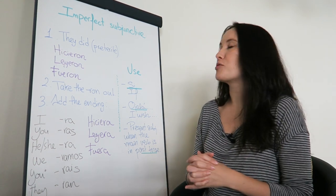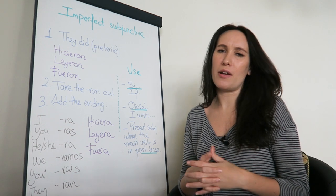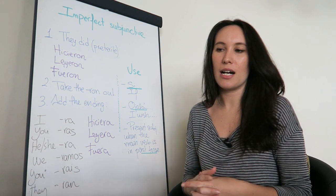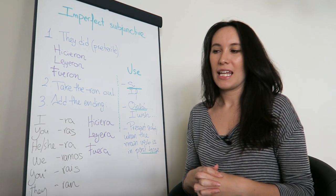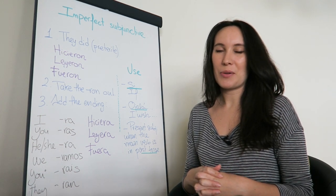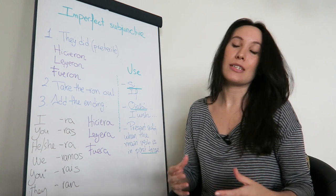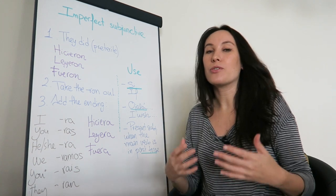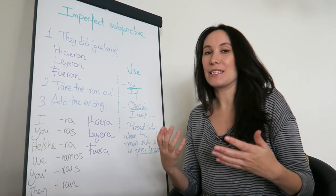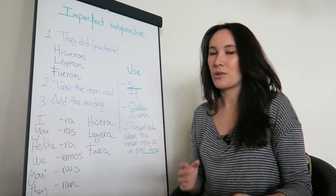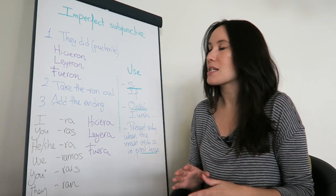Imperfect subjunctive is not very hard. It's about things that are not happening — they're not real, not happening in the moment. So let's see some cases.